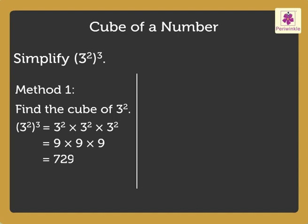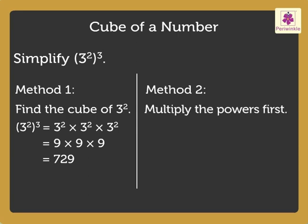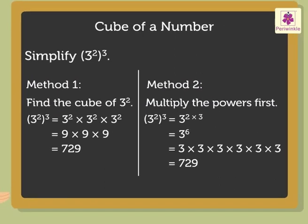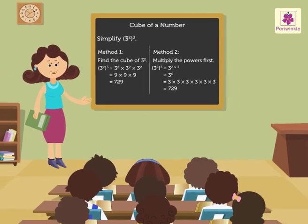The second method is to multiply the powers, that are 2 and 3, and then find the answer. That is, 3 raised to the power 2 into 3, which is equal to 3 raised to the power 6, which is equal to 3 into 3 into 3 into 3 into 3 into 3, which is equal to 729. You can use any method you like. Wasn't it easy learning cubes of numbers?